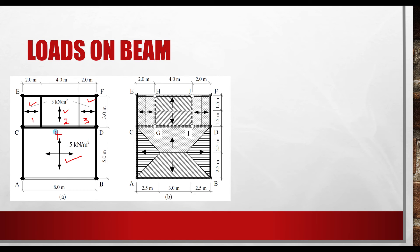For panel 4, which is a two-way slab, the slab is divided using yield line theory into four parts such that the load is distributed to the four edges of the slab. This results in a uniformly varying (triangular) load distribution on the supporting beams.